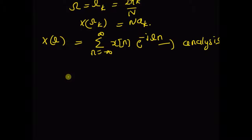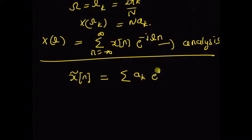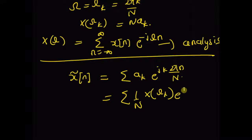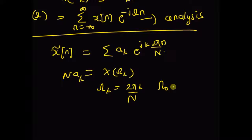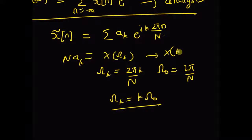From the synthesis equation of the discrete time Fourier series — x̃[n] = summation of a_k · e^(jk·2π·n/N) — by using the relation between a_k and X(ω), that is X(ω_k) = N·a_k, we have the summation of (1/N)·X(ω_k) · e^(jk·ω·n). We define ω₀ = 2π/N, so ω_k = k·ω₀. Hence N·a_k becomes X(k·ω₀).